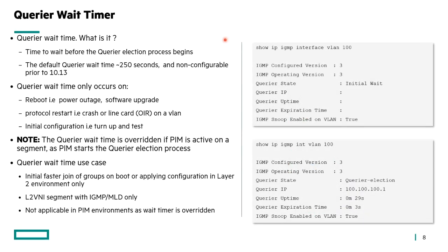The first thing I want to talk about is something called a querier wait timer — the time that we wait before we elect a querier. There's a waiting time before we actually become a querier. In CX the default time to become a querier on a segment is 250 seconds, and that's not negotiable prior to 10.13. So it takes quite a while to become the querier and then start to send data on that segment.